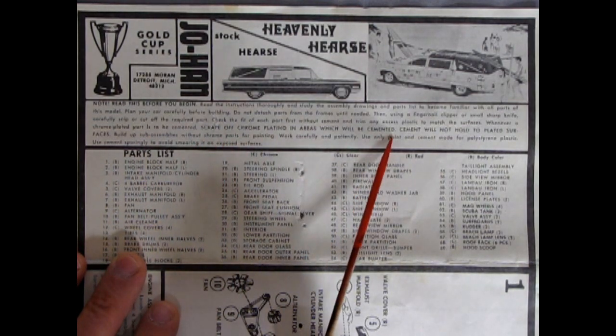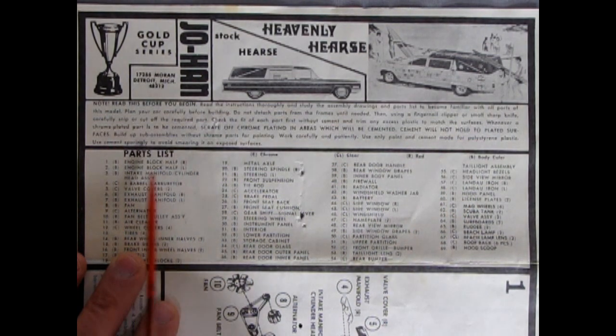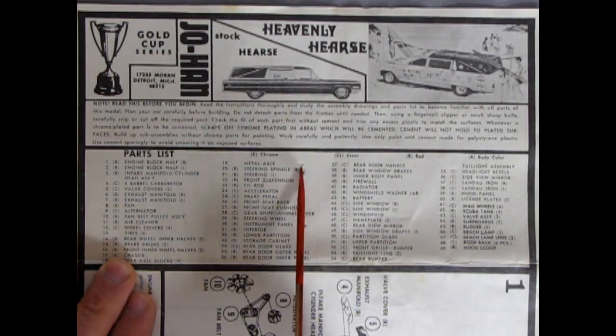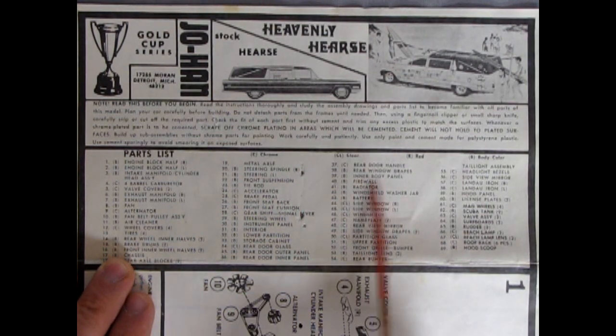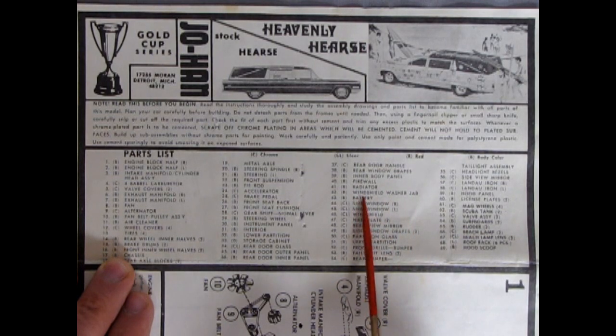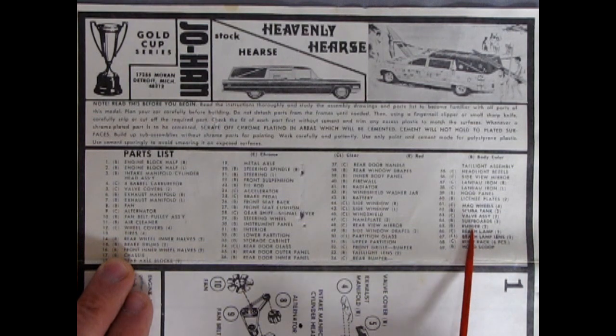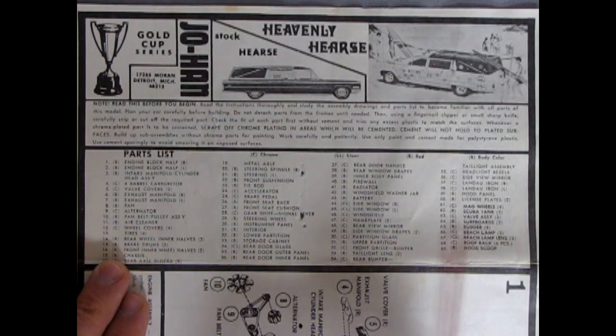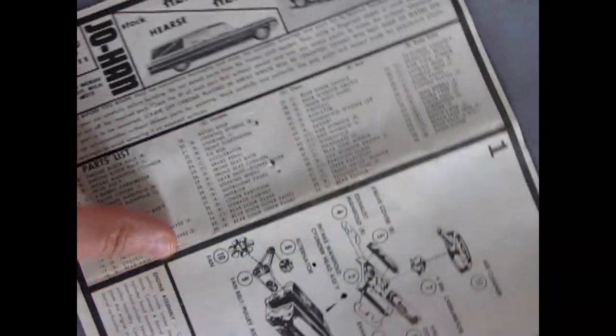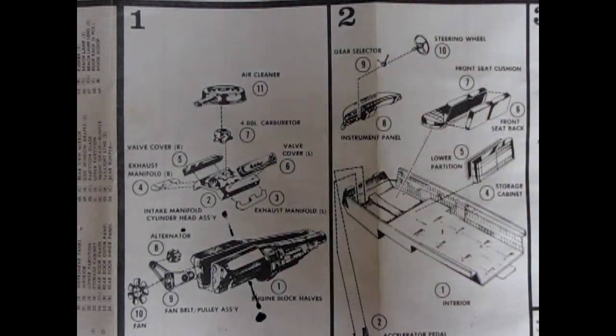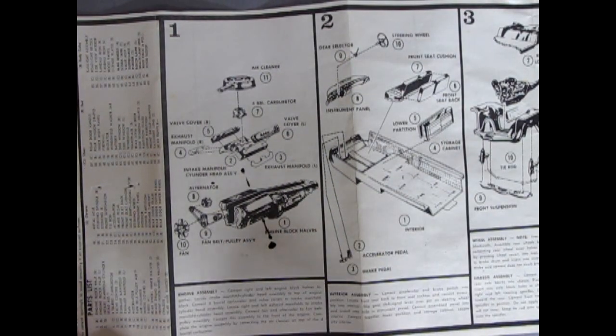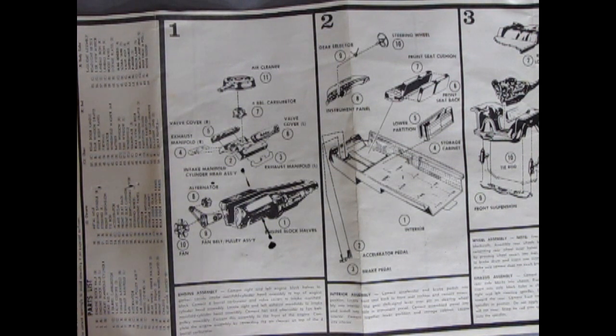Anyway, they give you an entire parts list, which is nice. This one got kind of crunched on the instructions there. But you've got like rear door handle, rear window drapes, radiator, windshield washer, jar, headlights, taillights, mag wheels, scuba tank. And the bolded parts here are for the Heavenly Hearse, whereas the rest is for the regular hearse. Now the interesting thing is Cadillac actually broke some sales records in 1966 with this model. And not the model kit, but the actual model, the real car. They ended up selling 200,000 cars for that year, which put them in 11th place in the sales. Very cool stuff.